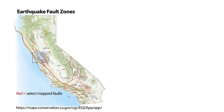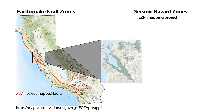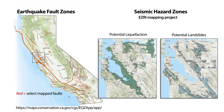The maps come in two flavors: earthquake fault zones, that look for places where active faults have previously broken the surface of the Earth, and seismic hazard zones, that look for locations that could experience earthquake-induced liquefaction and landslides.